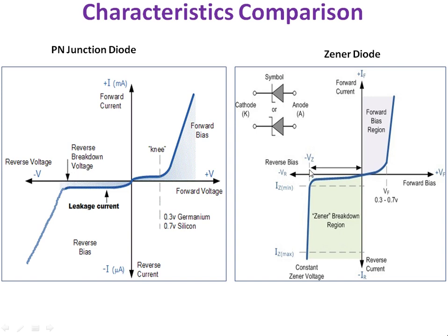But here the Zener breakdown voltage may vary from 2, 3.3, 5, and up to 400 volts. This is the Zener breakdown region. This breakdown in the PN junction is mainly happening because of the avalanche effect. But here, the breakdown of the depletion layer is happening because of the Zener effect — due to the very high electric field in the depletion layer. That is the Zener effect. Avalanche breakdown is mainly due to the ionization process.